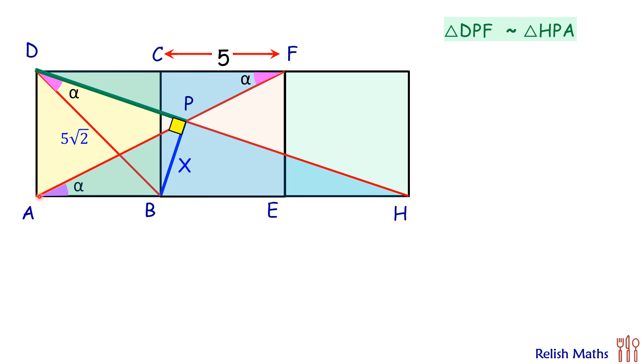As the triangles are similar, the ratio of corresponding sides will be equal. So here we can say that DF upon AH, that will be equal to DP upon HP. But DF upon AH is nothing but 10 upon 15, so DF is 10 centimeters, AH is 15 centimeters. So we can say DP upon PH is basically 2 by 3.